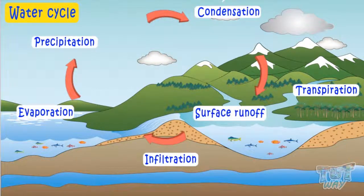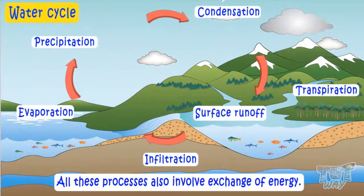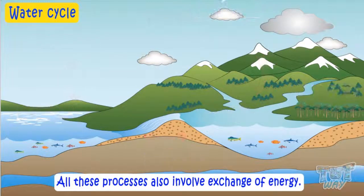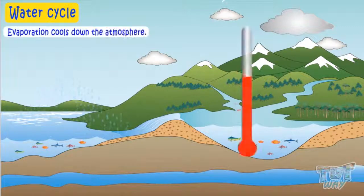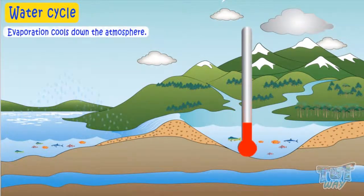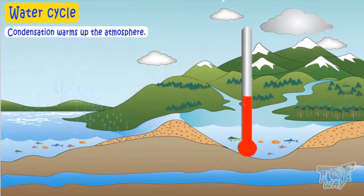All these processes also involve exchange of energy, which is why the water cycle also leads to temperature changes — like evaporation cools down the atmosphere, and condensation warms up the atmosphere.